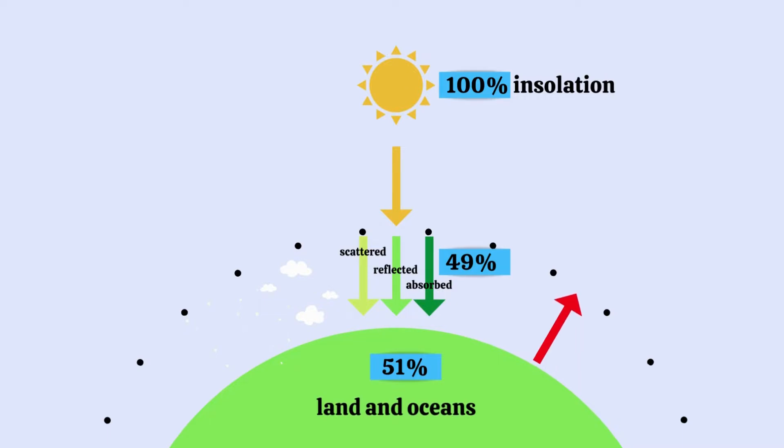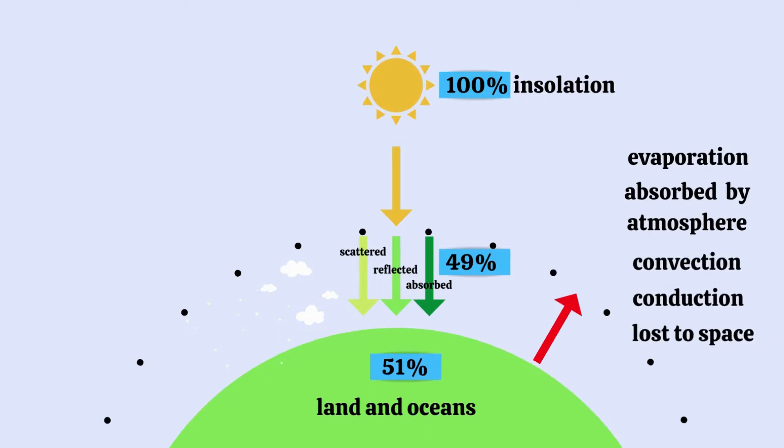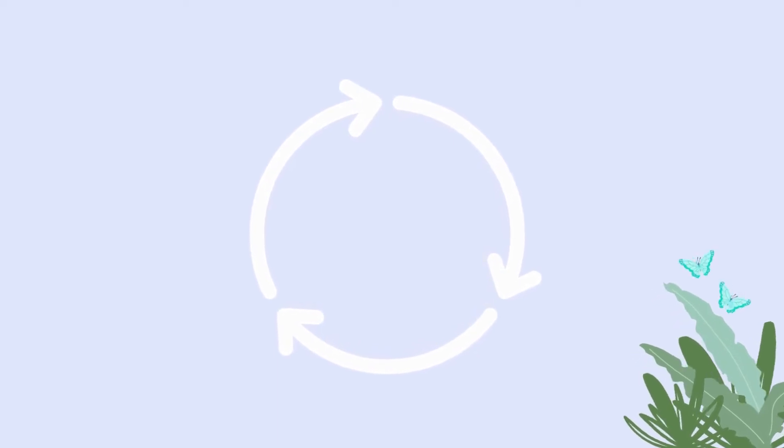Once this energy is re-emitted as terrestrial radiation, some of it is used during evaporation, some is absorbed by the atmosphere, some undergoes convection and conduction, and some is simply lost to space. This process repeats itself over and over again, and this allows Earth to sustain life.